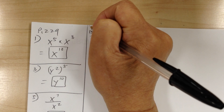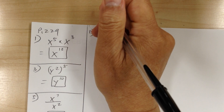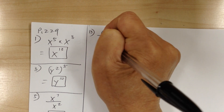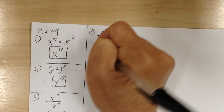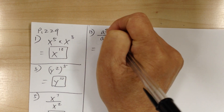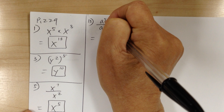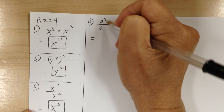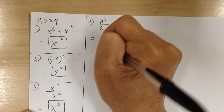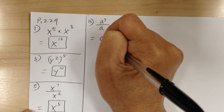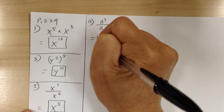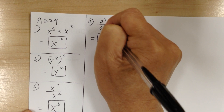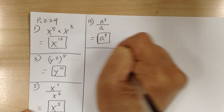Number 13, you have a to the 5 divided by a. This is a division, so you use the quotient rule. When you have division, you subtract. So it would be a to the 4 power. When you don't see the exponent, it means it's 1. So 5 minus 1 gives you 4.